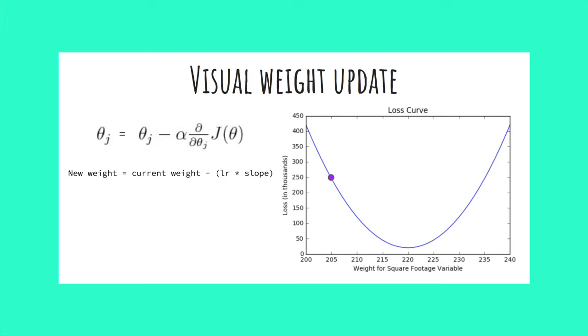So if we plug in our numbers, we have our current weight at 205. Our learning rate at 0.0001. This is a number we define ourselves and a slope of negative 34,000 based on the slope of the tangent line we see in red. So we can simplify this function and find our new weight is 208.4.